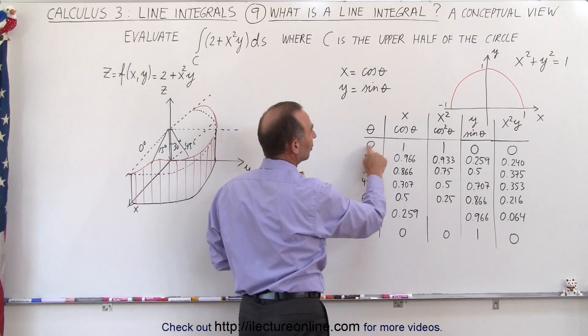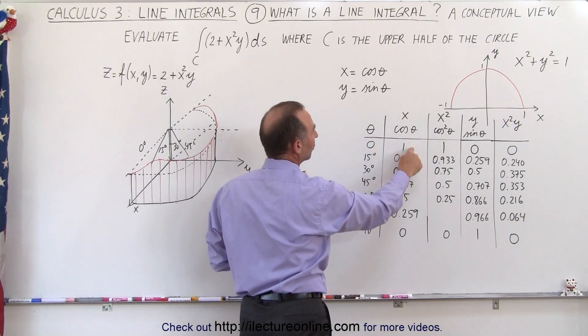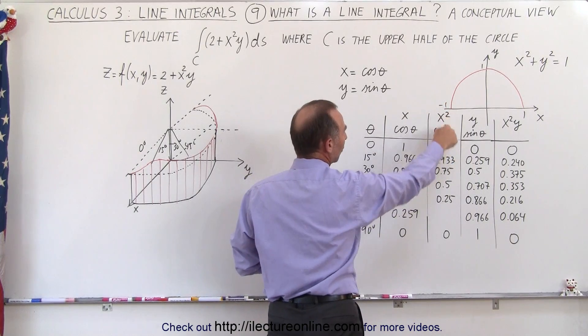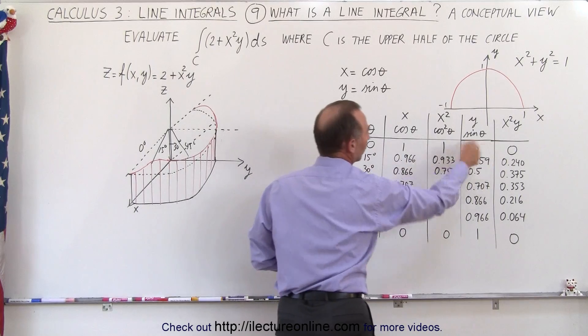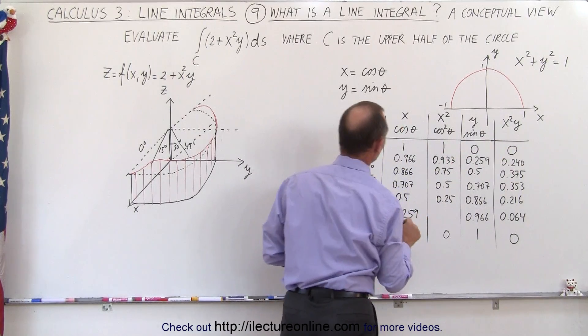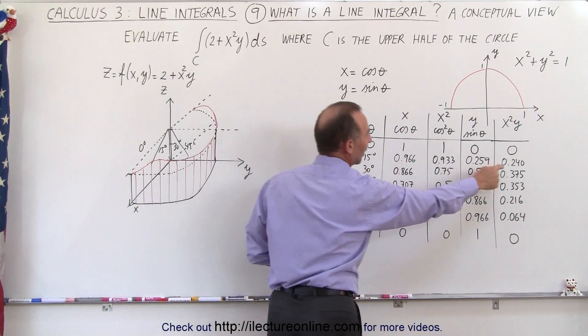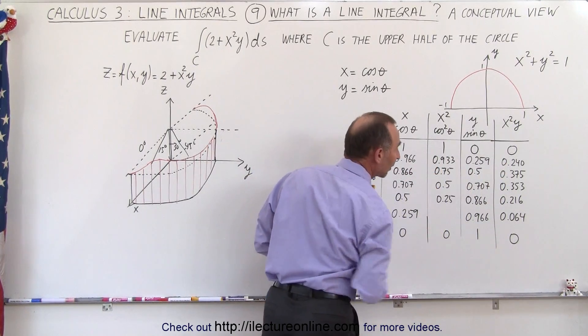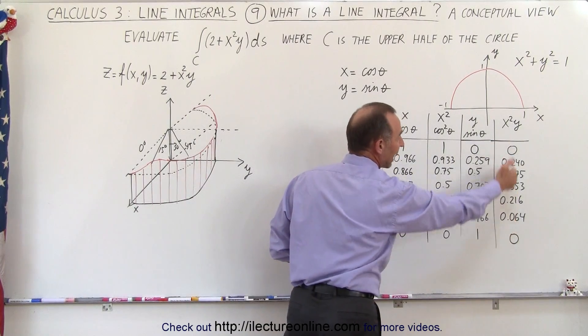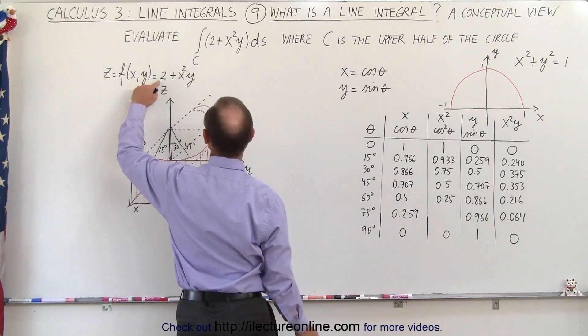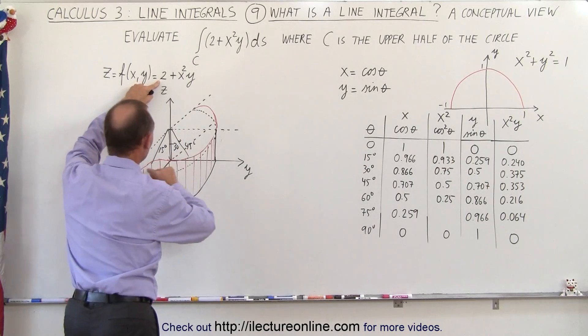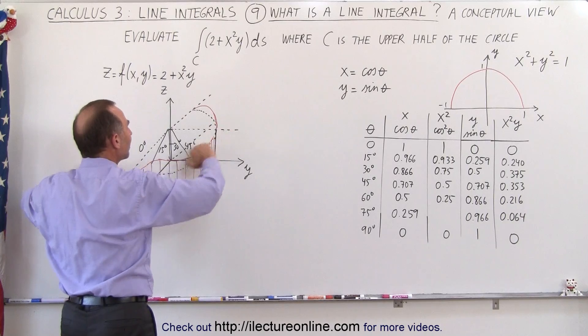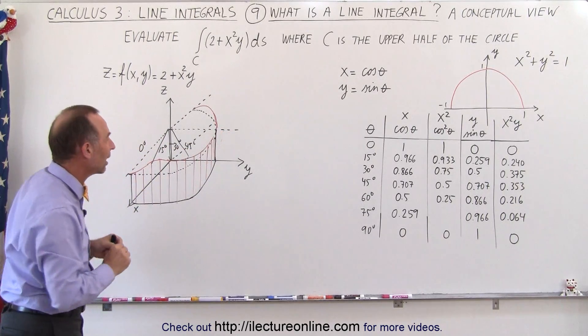So when theta is equal to 0, the cosine of 0 is equal to 1, so x equals 1, and in that case the x squared would be 1 and y would be 0, so we multiply all this together, x squared y would be 0. At 15 degrees, the value is 0.24. At 30 degrees, the value is 0.375 as we plug in the correct values. You can see then that this would be added to the constant 2 for the various angles and that's how we end up with the height along the edge here to define the path of the curve that we're going to take.